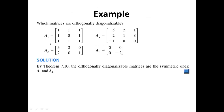Example: Which matrices are orthogonally diagonalizable? With the fundamental theorem of symmetric matrices, all I have to do is verify which of these matrices are symmetric. Look at A1 — elements on the main diagonal: 1, 0, 1. Across the main diagonal in equivalent positions: 1, 1; 1, 1; 1, 1. Therefore, by the fundamental theorem of symmetric matrices, A1 is orthogonally diagonalizable.